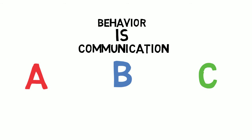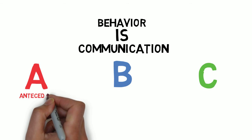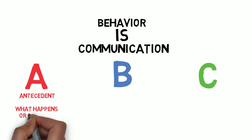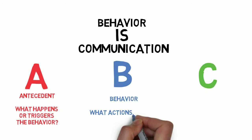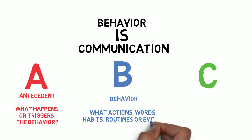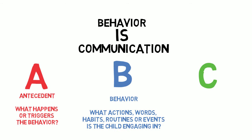When thinking about this, I want you to think about A, B, C. First, A is the antecedent — this is what happens or triggers the behavior. When watching your child, you want to look for what's happening right before the behavior. Did the child see something? Did the child hear something? Is their diaper soiled? What is happening right before B, the behavior? What actions, words, routines, or events is the child engaging in? What does this behavior look like? Really dive into that and be as specific as you can.